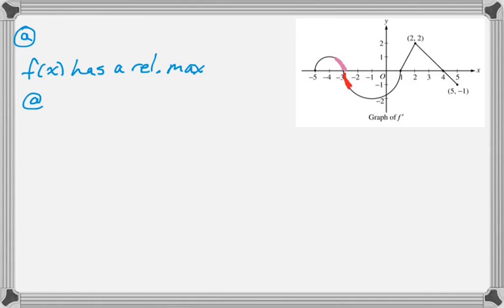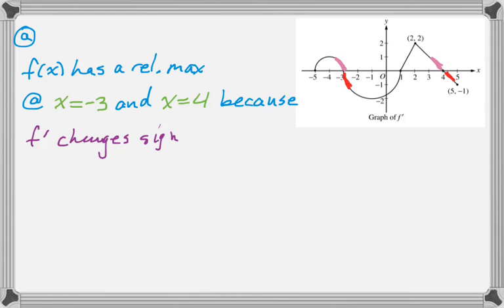You can see that at negative 3 it goes from positive to negative, and also if you keep looking you'll see at 4 it changes from positive to negative. So f of x has relative maximums at x equals negative 3 and at x equals 4, and the reason is because f prime changes from positive to negative at those points. That's pretty much the whole solution to this. Just got to know what you're doing when you read these graphs.